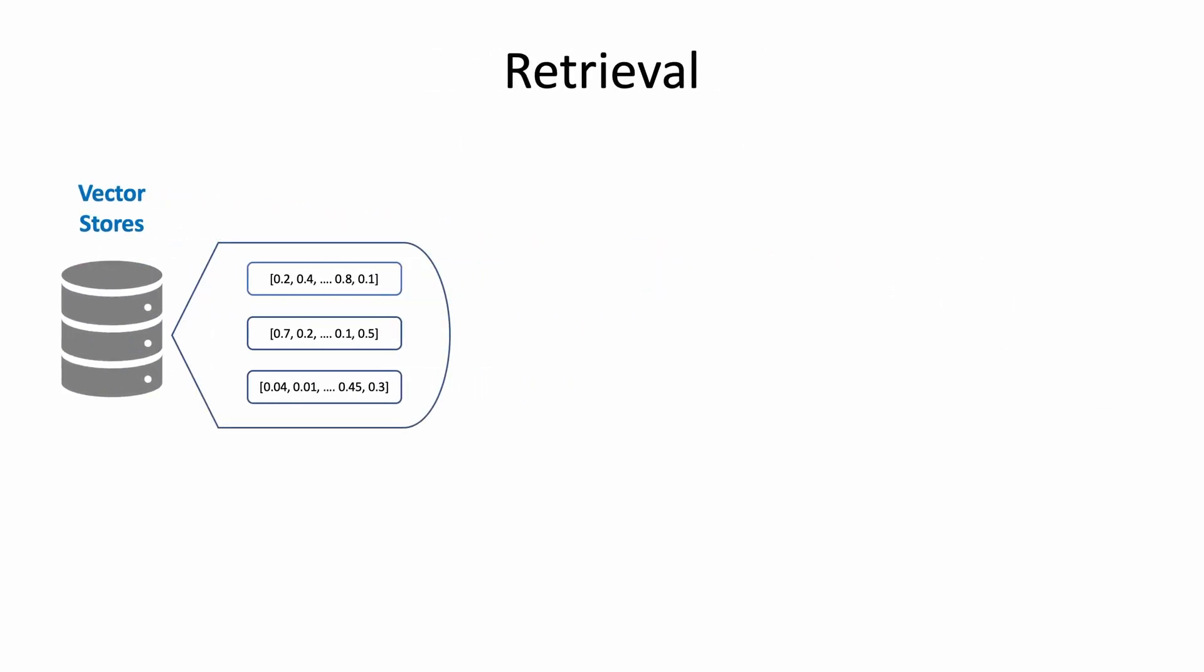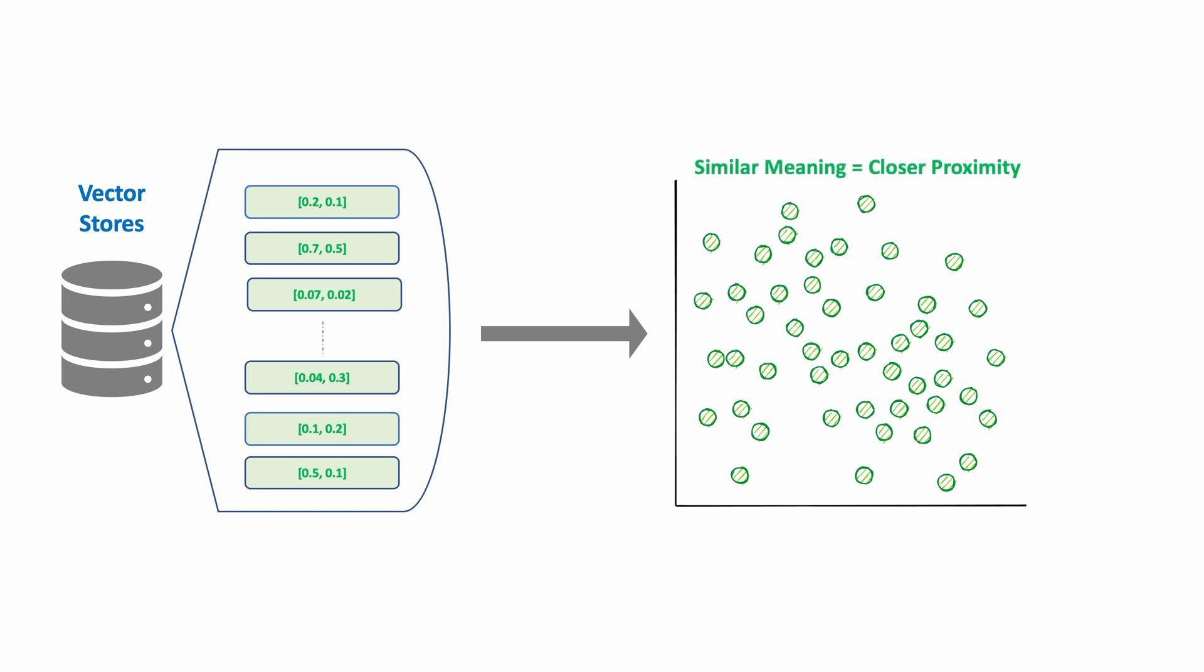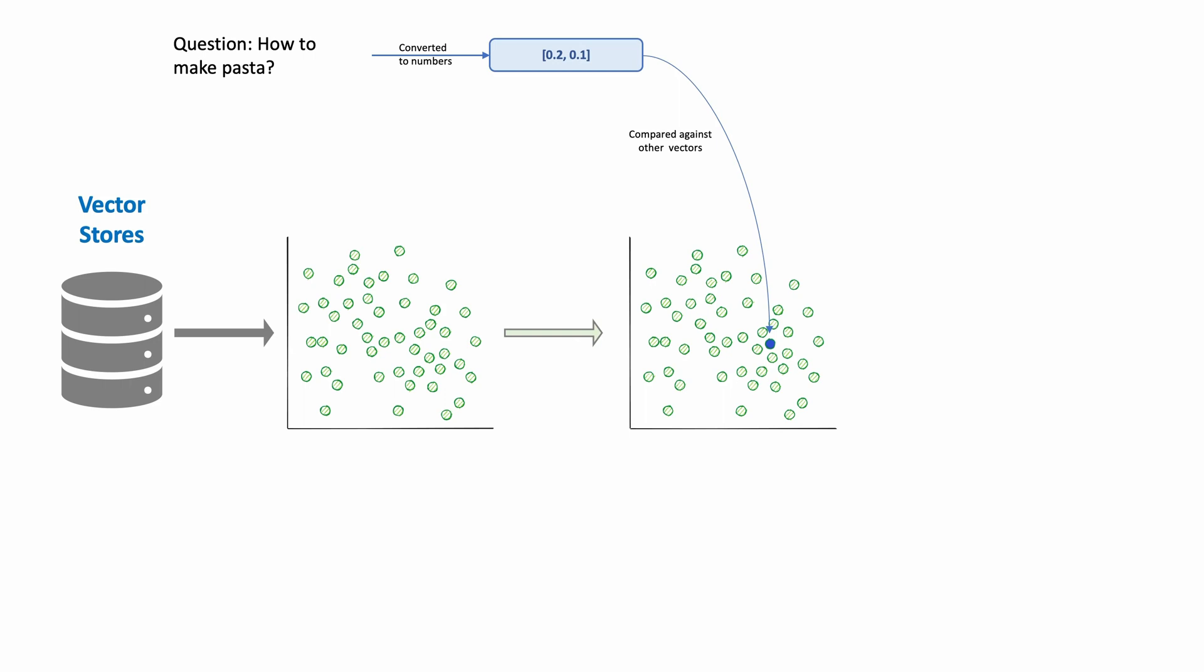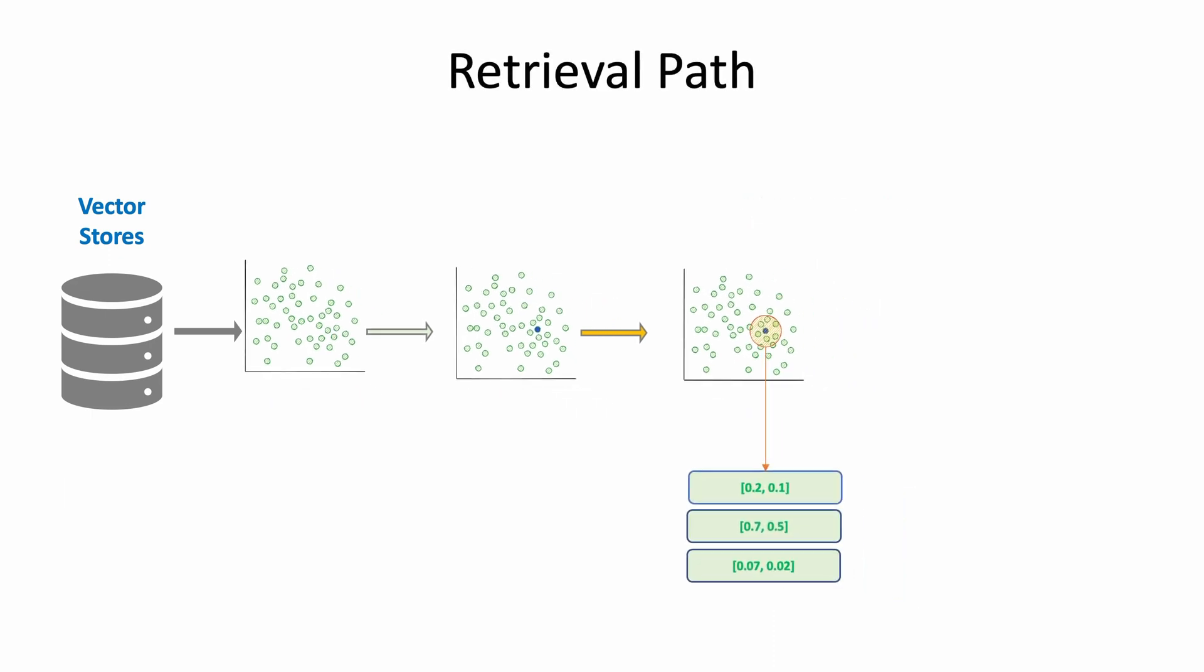The retrieval process starts with vector stores where we have a number of vectors available. Now to help us understand visually, let's imagine these vectors are in two dimensions with x and y component which we can plot on XY plot in a way that similar meaning vectors are closer in proximity on this XY axis. Now once a user asks a question, then that question is also embedded in a similar dimension and then compared against the vectors available to us. And there are a number of ways we can retrieve these vectors. One of the most common ones is to do a similarity based search where we select the nearest neighbors to our question and retrieve those vectors and convert them to original text form and then generate our response.